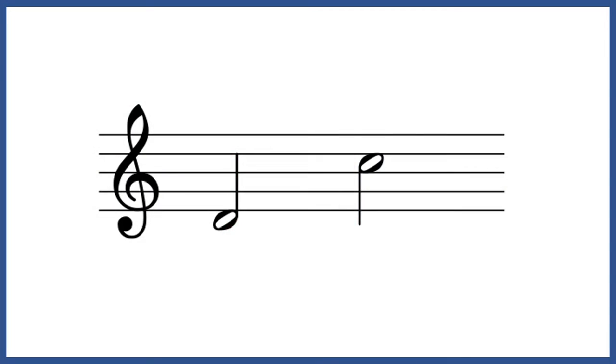In tonal music, we name intervals with reference to scale steps. A fifth is the distance between the first and fifth steps of the scale, and so on. This system works well when using letter names to refer to pitches. For example, D to C is a minor seventh because you'd count seven steps in a scale from D up to C.